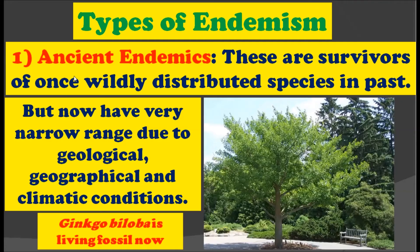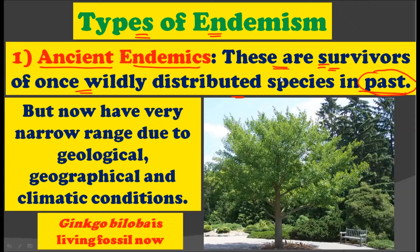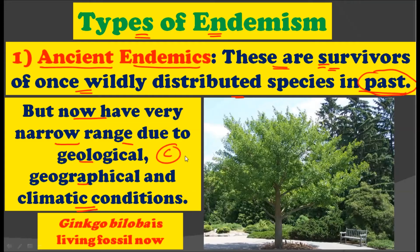Now what are the types of endemism? The first type is ancient endemics. In ancient endemics, the species are survivors of once widely distributed species in the past. In the past, the species was widely distributed on Earth, but now that species is found in very few numbers — they are survivors of past species that were distributed throughout the globe. Although in ancient times they were distributed widely, now they have a very narrow range due to geological, geographical, and climatic conditions that have since changed.